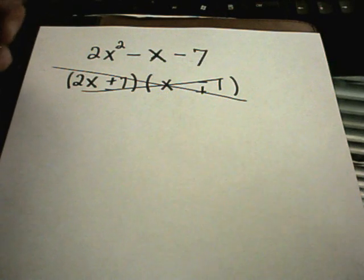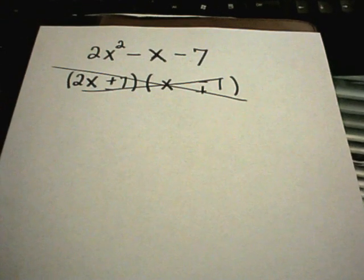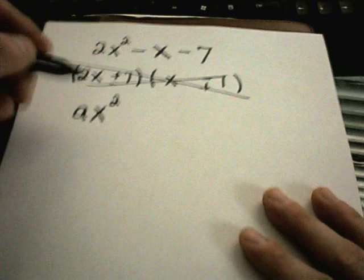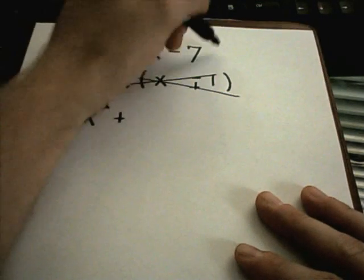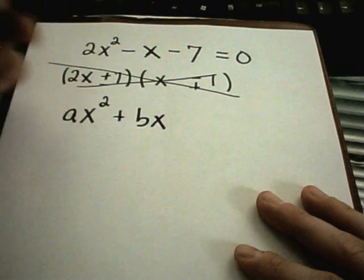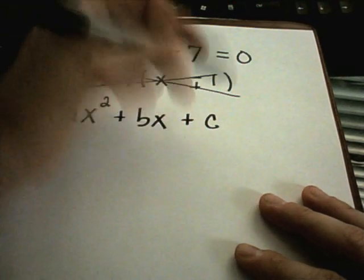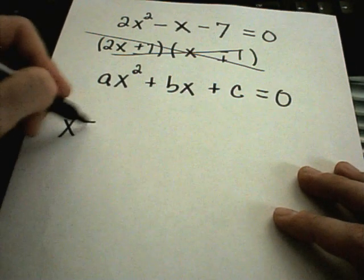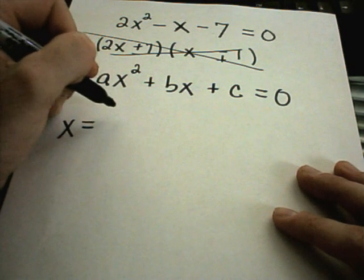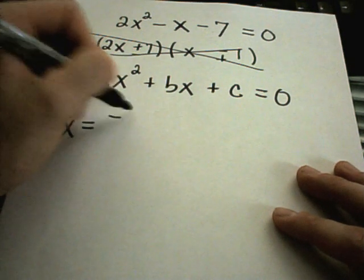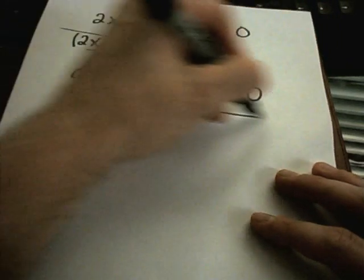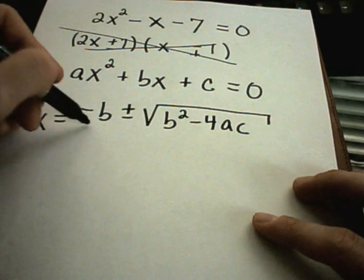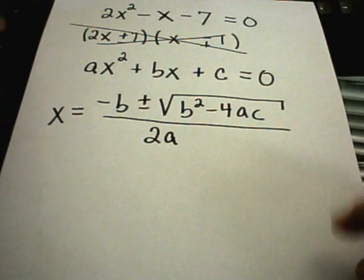So, the good way, it's the long way, but the good thing about it is it always works, is what's known as the quadratic formula. It says in general, if you have a quadratic, I'm going to call the number in front of x squared, a. I'll call the number in front of x, b. And then whatever number is hanging around, we're going to label that as c. It says if you want to find where this thing equals 0, x equals negative b plus or minus the square root of b squared minus 4 times a times c all over 2 times a. Those will give you your solutions.